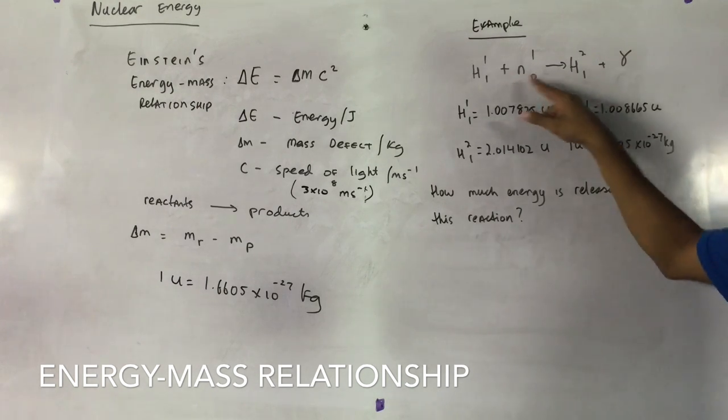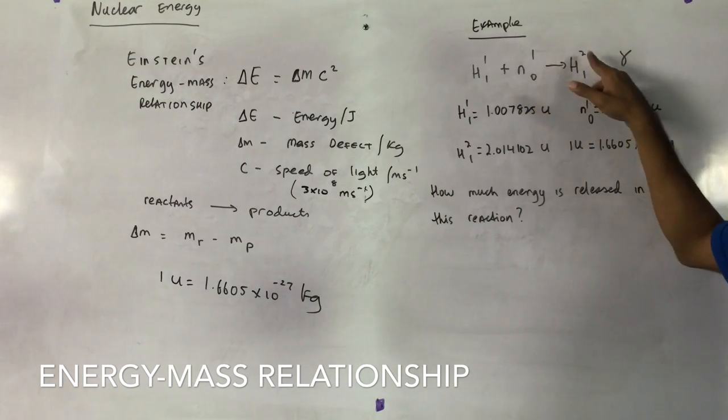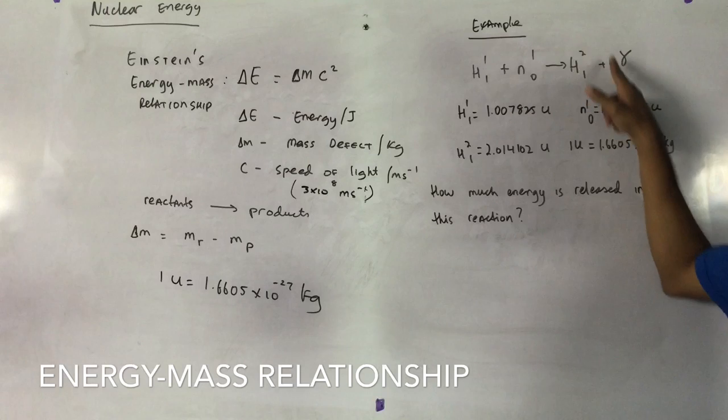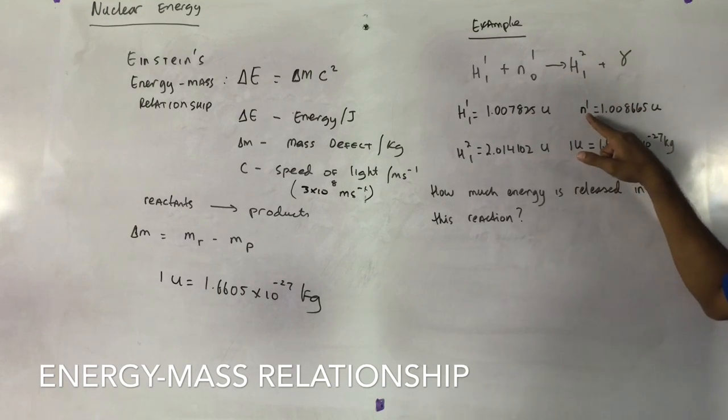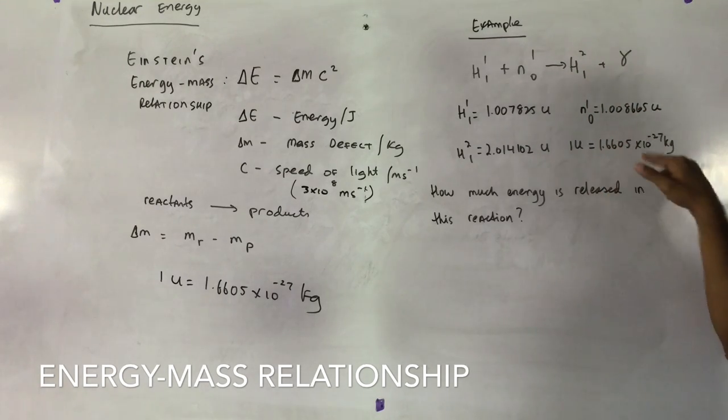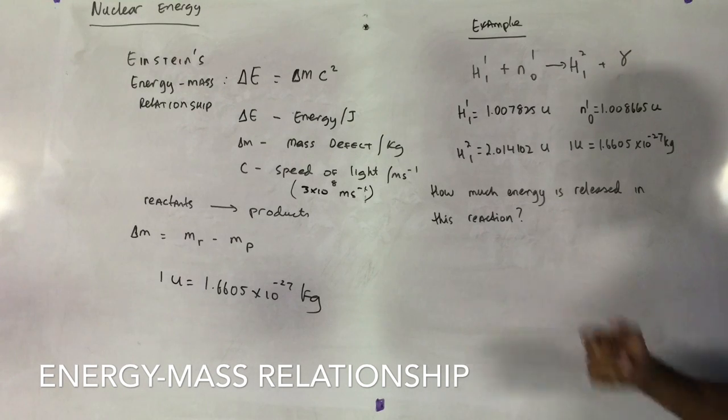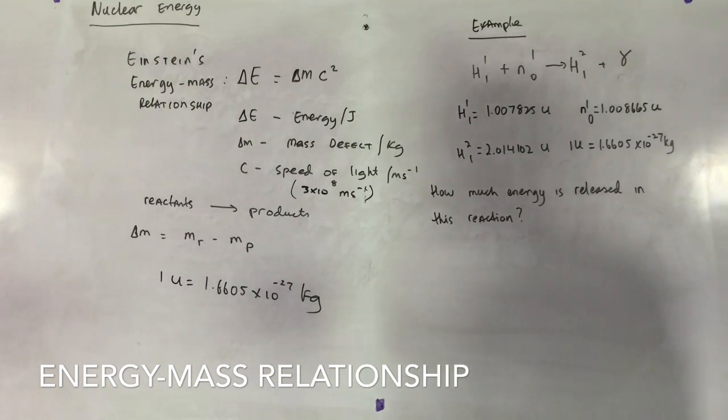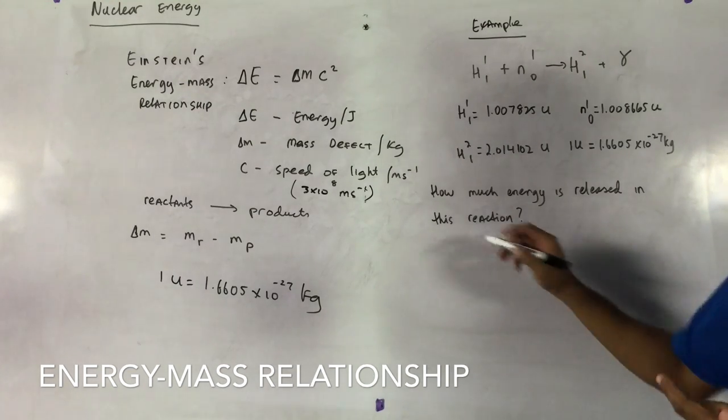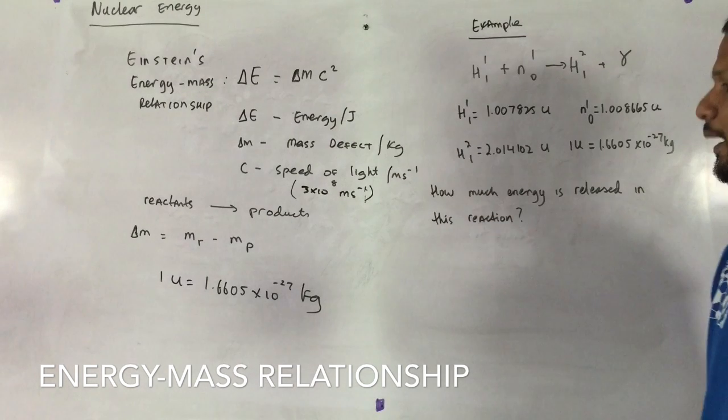And now it's an isotope, same atomic number but different mass numbers. So this is an isotope of hydrogen, a neutron, and this is the question. And the question is how much energy is released in this reaction? So we all know, say a reaction, what we need to use is E is equal to mc squared.